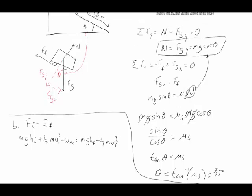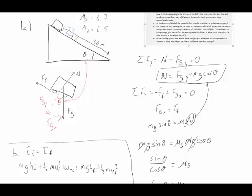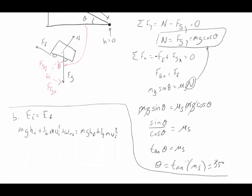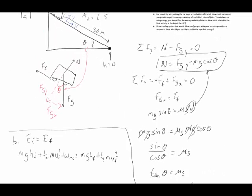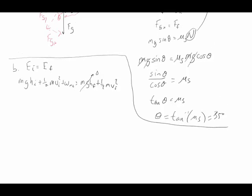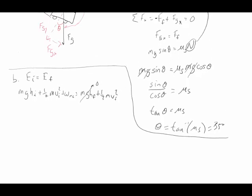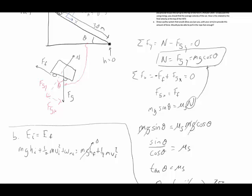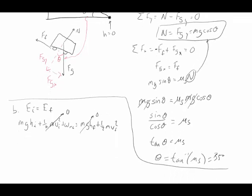We set the bottom of the hill as h equals zero, so at the end there's no height. At the beginning, the car is not moving, so the initial velocity is zero, eliminating that term. We're left with mgh_initial plus work_non-conserved equals one-half mv_final squared.